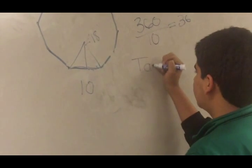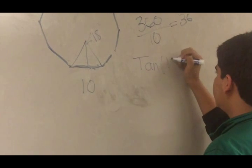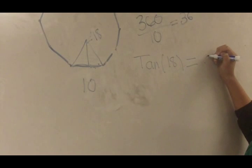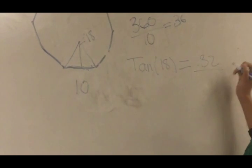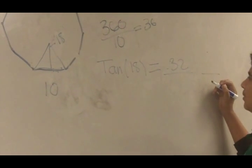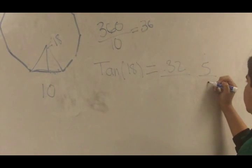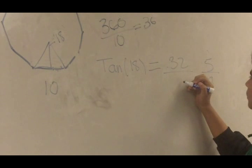Now I use tangent so I can find the apothem. This gives me 0.32, and tangent is opposite over adjacent, so I put 5 right here and a for the apothem.